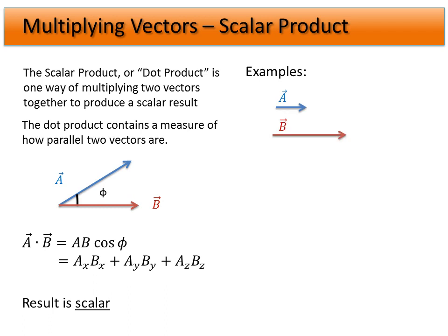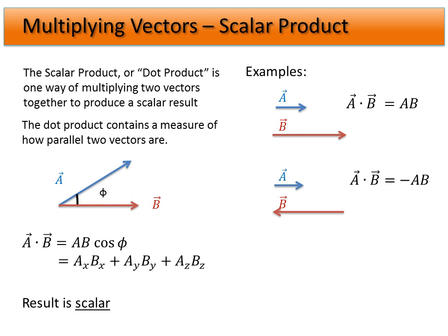There are a couple of classic examples we can run through. If A and B are exactly in the same direction, the angle is zero degrees and the cosine of zero degrees is one. So the dot product of A and B, when they're pointing in exactly the same direction, is just the multiplication of the magnitudes times cosine of zero, or just multiplying by one. Similarly, if A is dotted into B where they're exactly opposite, they're 180 degrees apart. So A dotted into B gives the magnitude of A times the magnitude of B times the cosine of 180 degrees, and the cosine of 180 degrees is negative one.